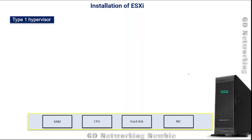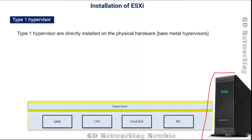In this video I'll show you the steps to install ESXi, which is a hypervisor from VMware. We've discussed what type 1 hypervisors are — on a physical machine you have NIC, hard disk, CPU, RAM, and all hardware devices. On top of those devices we install the hypervisor. Type 1 hypervisors are directly installed on the physical hardware, also called bare metal hypervisors, and they don't have their own operating system.